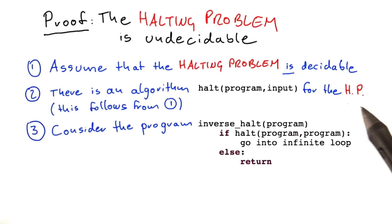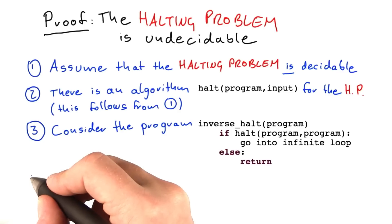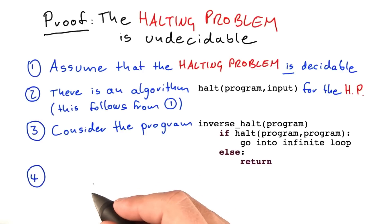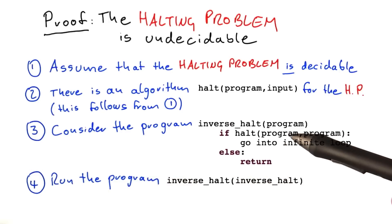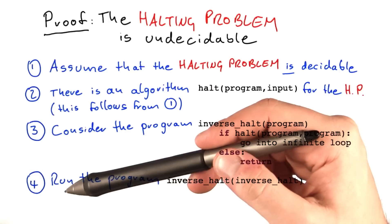Now we're almost there. There's just one more step missing to arrive at our proof by contradiction. To actually conclude the proof, we'll now consider the following program.